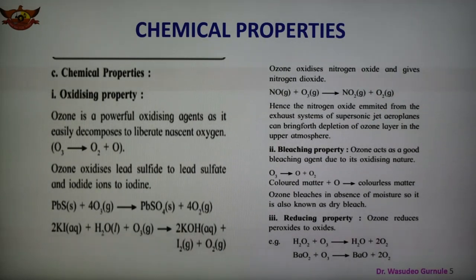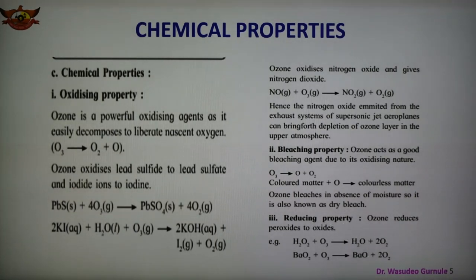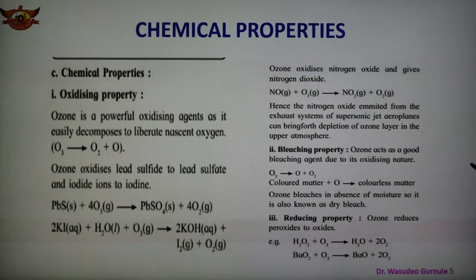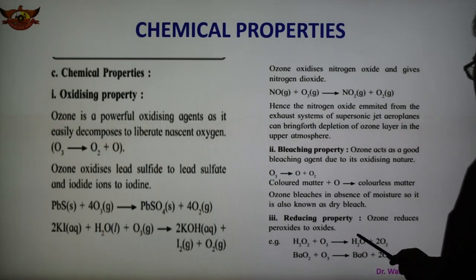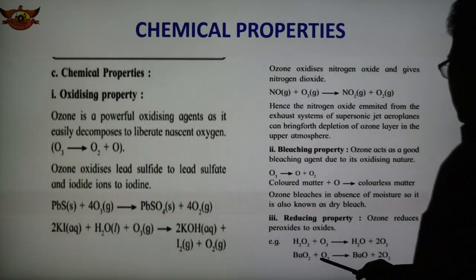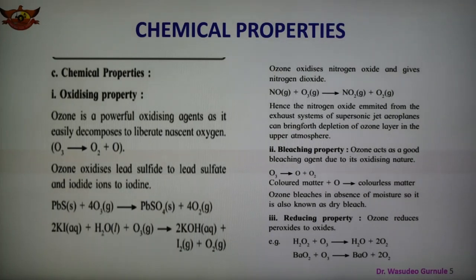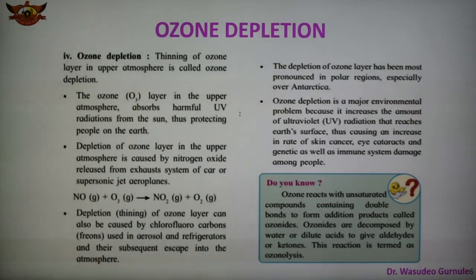Ozone also shows reducing property. Ozone reduces peroxides into oxides. Hydrogen peroxide reacts with ozone forming H2O and oxygen. Barium peroxide reacts with ozone forming barium oxide. So peroxide is converted into oxide by reduction, and ozone can act in a reducing capacity.